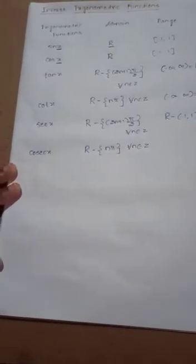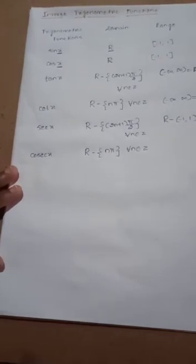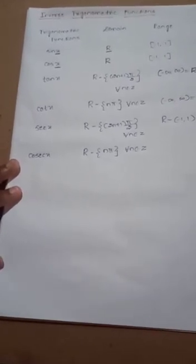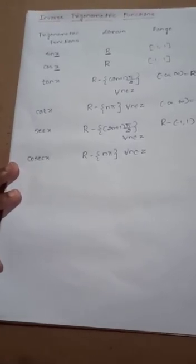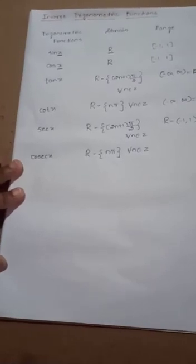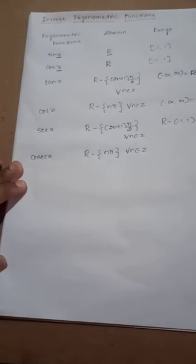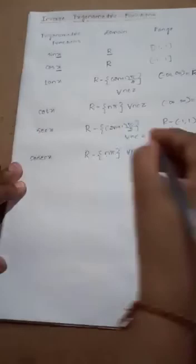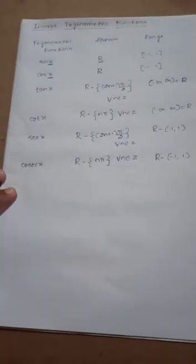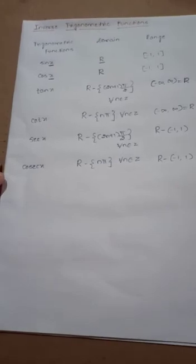Now for the range of cosec: we get values like 2, √2, 2/√3 for 30°, 45°, 60°, and the function approaches infinity near 0°, 180°, and 360°. Like sec, cosec can take all real values except those in the open interval (−1, +1). The values −1 and +1 are included, but not the values strictly between them. Therefore, the range of cosec is the set of all real numbers excluding the open interval (−1, +1). We needed these trig function domains and ranges to find the inverse trigonometric function domains and ranges.